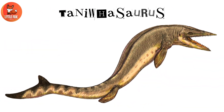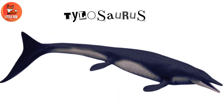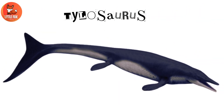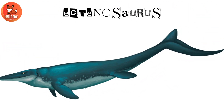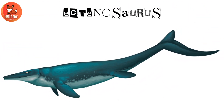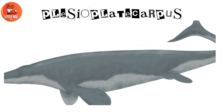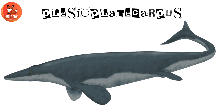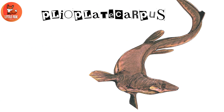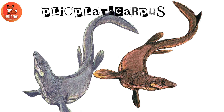Number 21: Tanaeusaurus. Number 22: Tylosaurus. Number 23: Ectinosaurus. Number 24: Plesioplaed carpus.